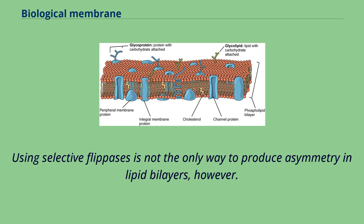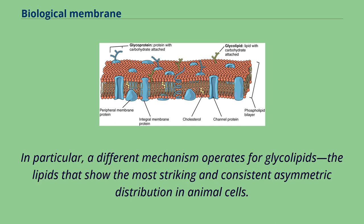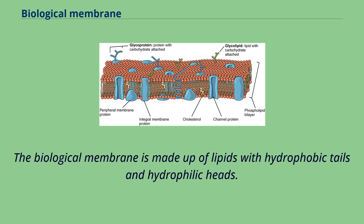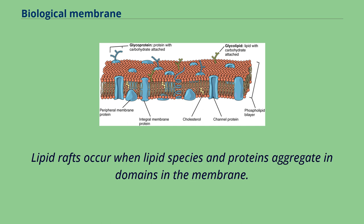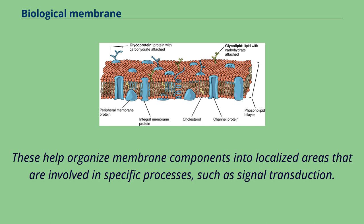Using selective flipases is not the only way to produce asymmetry in lipid bilayers. A different mechanism operates for glycolipids — the lipids that show the most striking and consistent asymmetric distribution in animal cells. The biological membrane is made up of lipids with hydrophobic tails and hydrophilic heads. The hydrophobic tails are hydrocarbon tails whose length and saturation are important. Lipid rafts occur when lipid species and proteins aggregate in domains in the membrane, helping organize membrane components into localized areas involved in specific processes such as signal transduction.